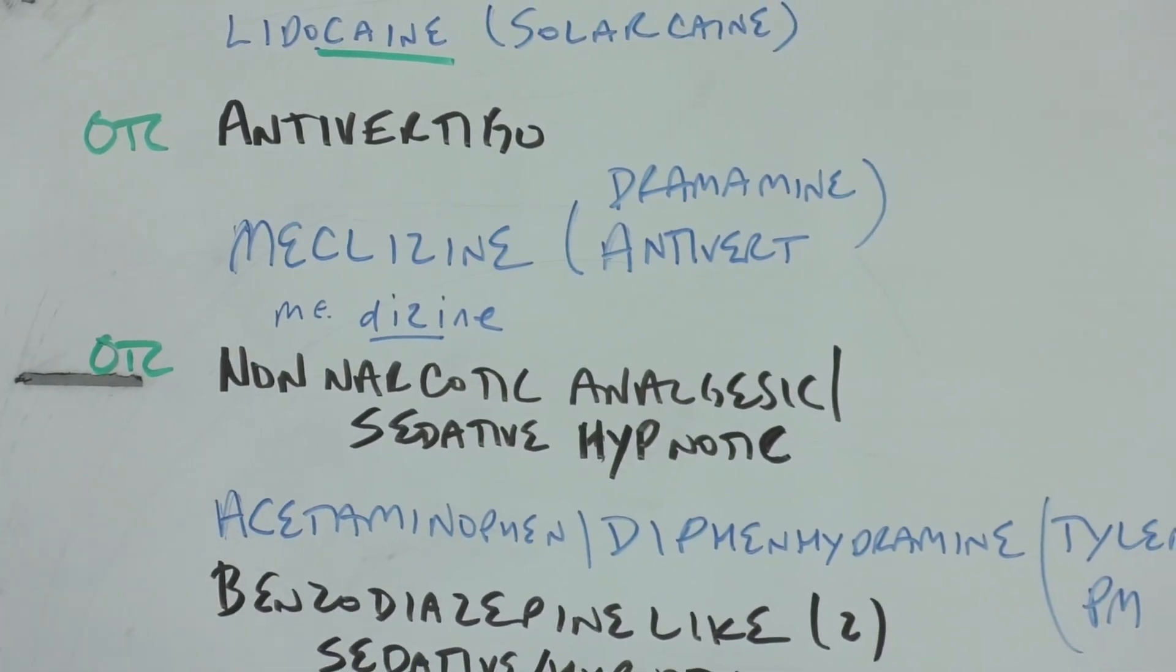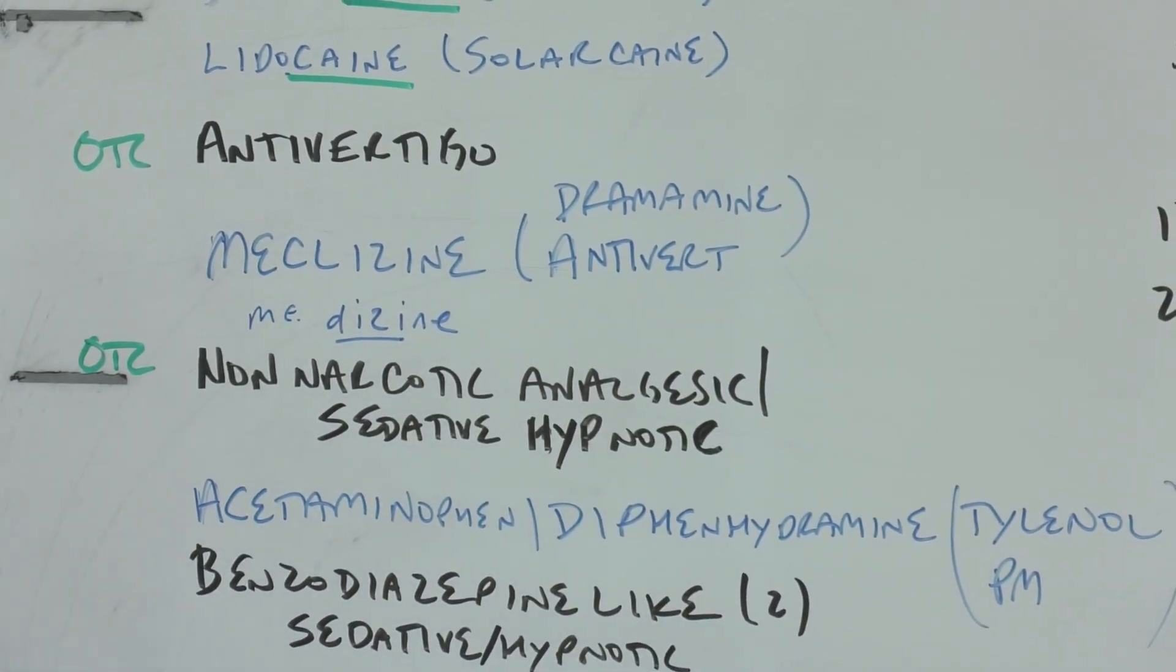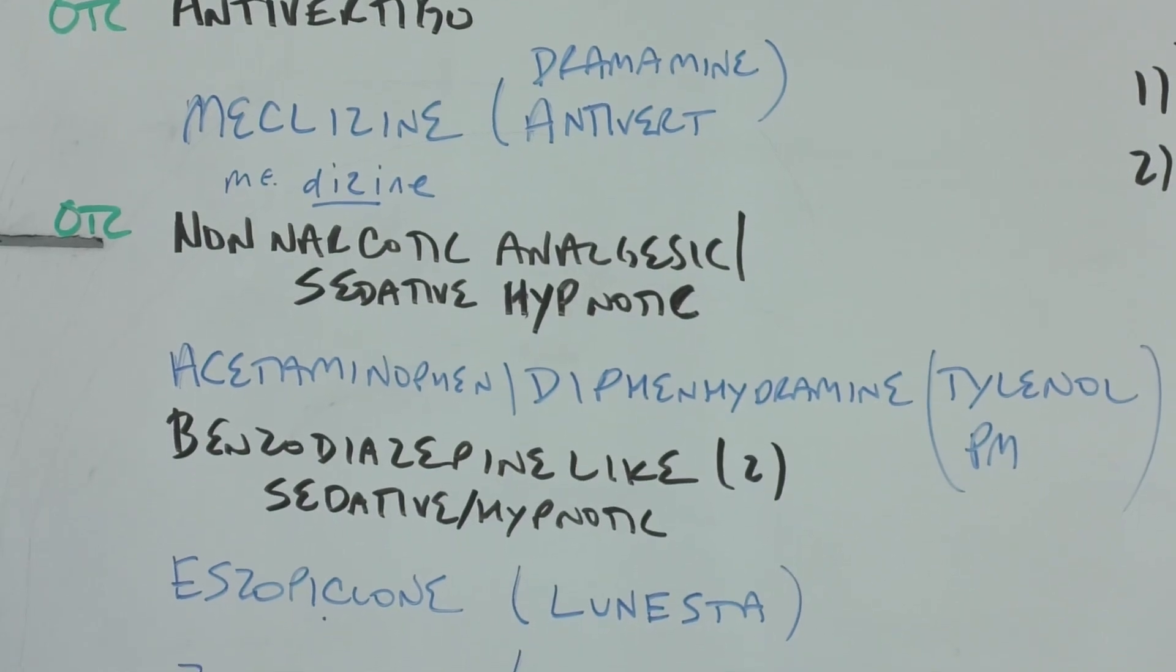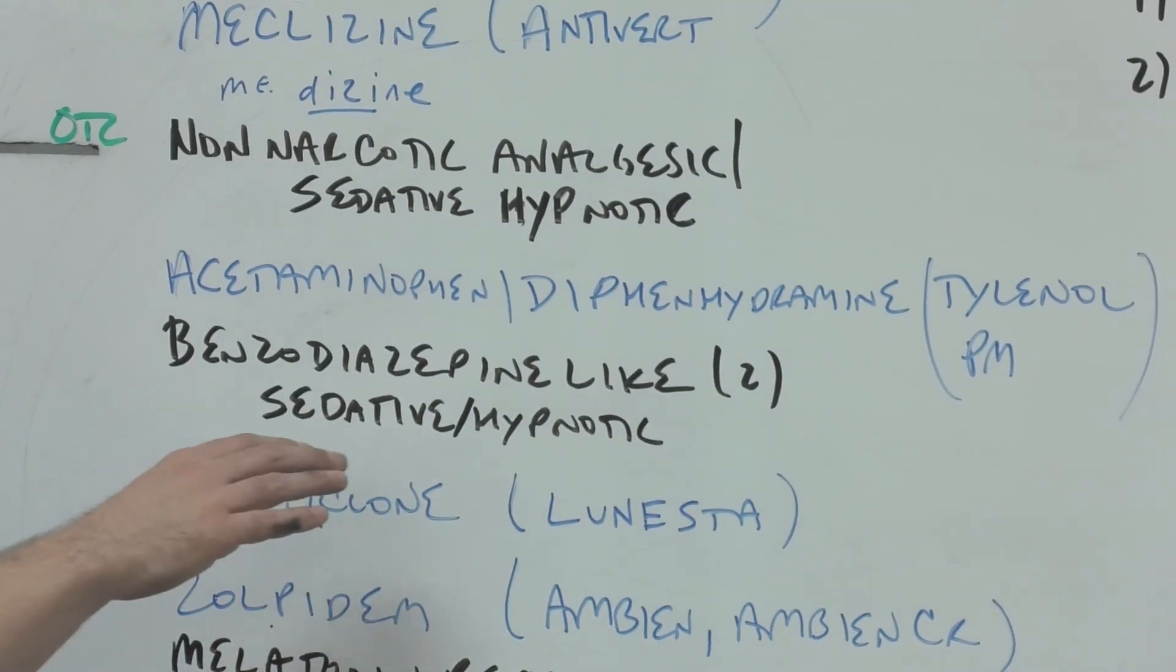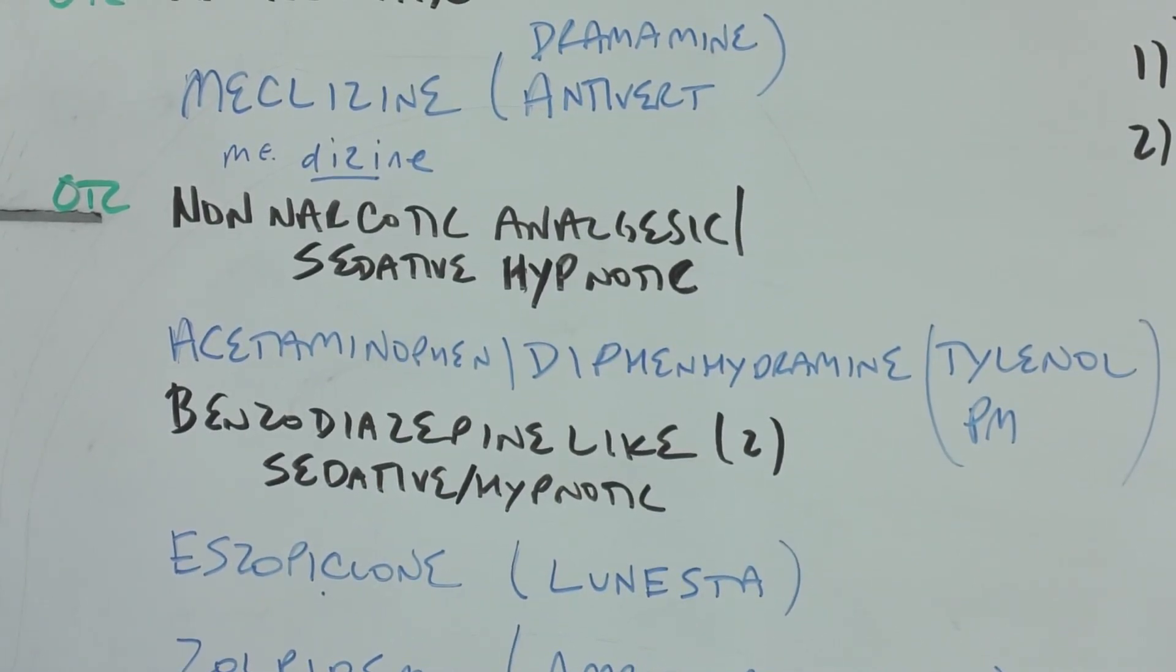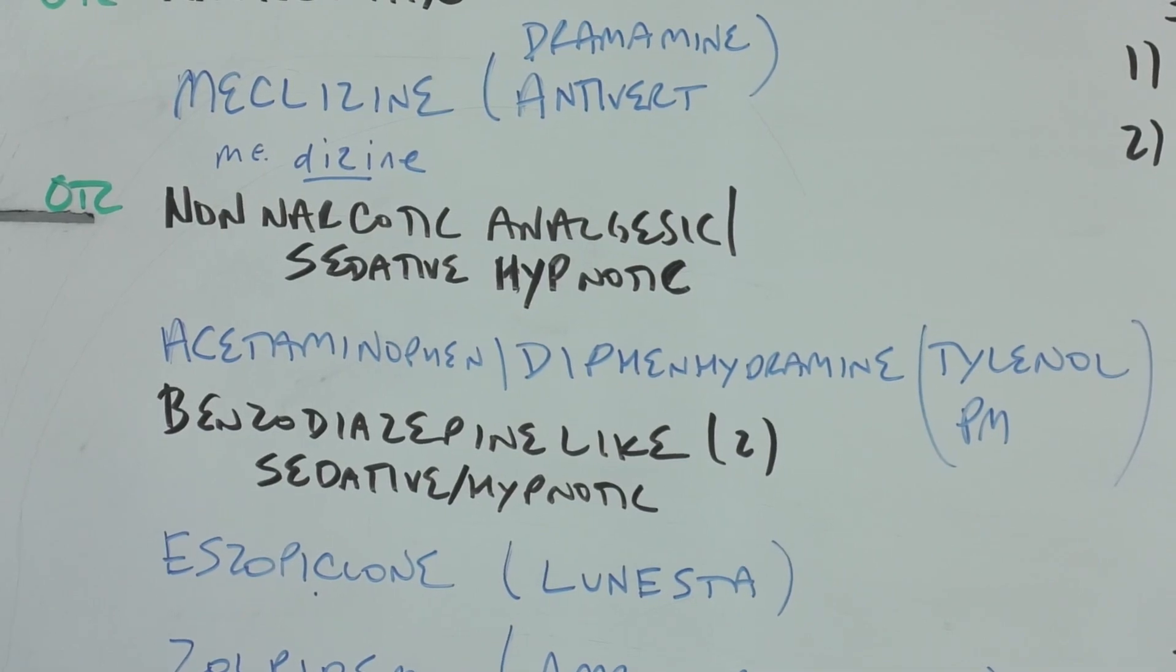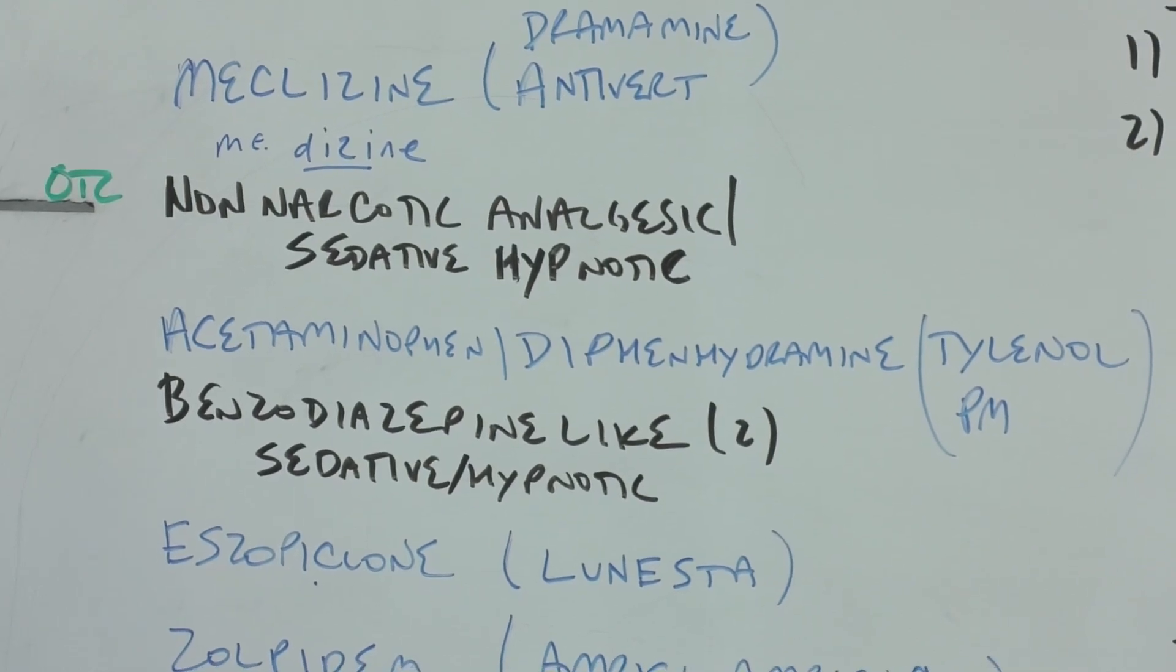Another OTC under neuro would be sedative-hypnotic, and we see diphenhydramine. You might say I remember that one as an antihistamine, and that's what's kind of infuriating about pharmacology - things can be for many different uses. Diphenhydramine as an adverse effect made someone drowsy, but here we're using that side effect as a good thing. Tylenol PM: acetaminophen plus diphenhydramine the antihistamine that makes you tired.